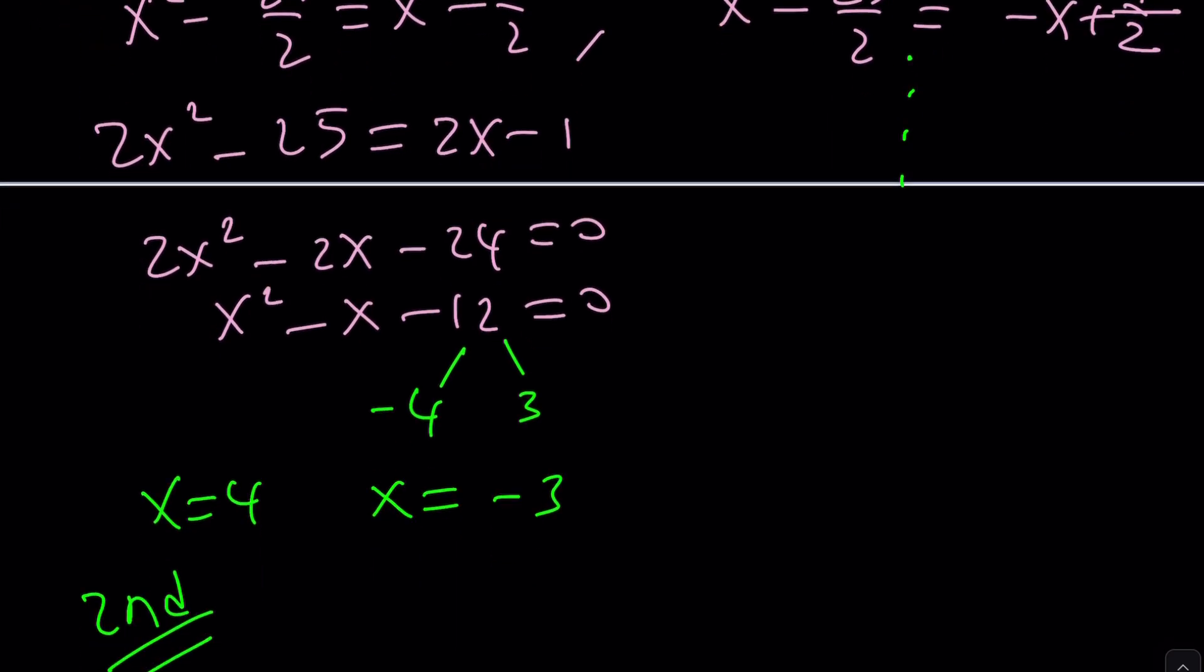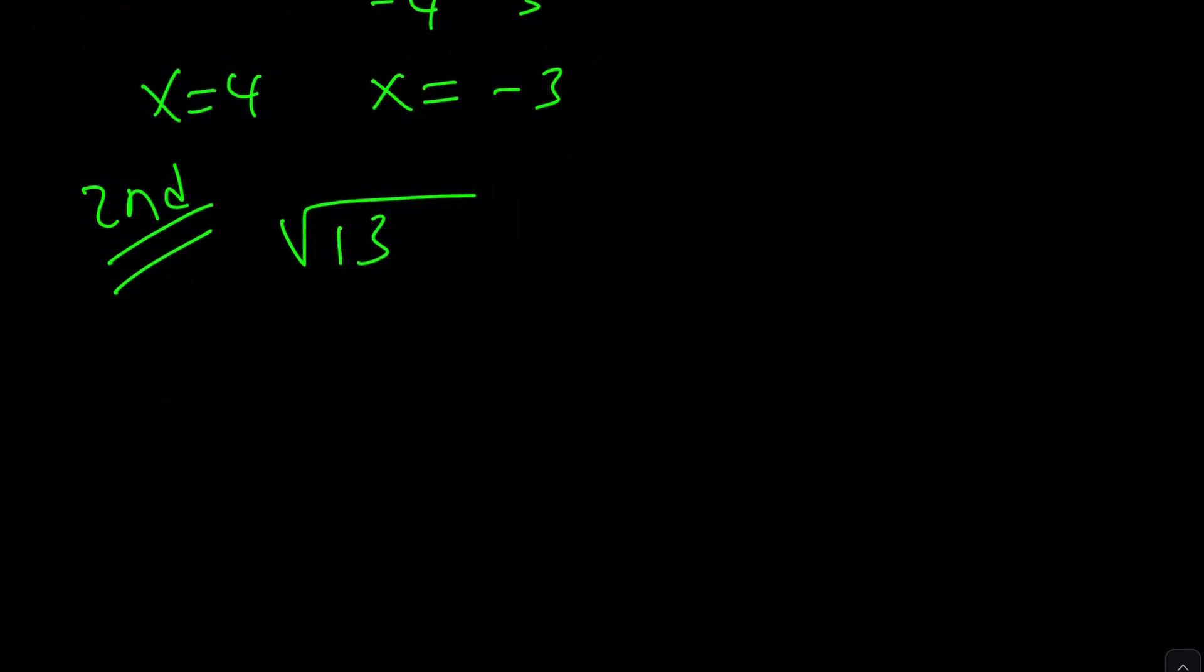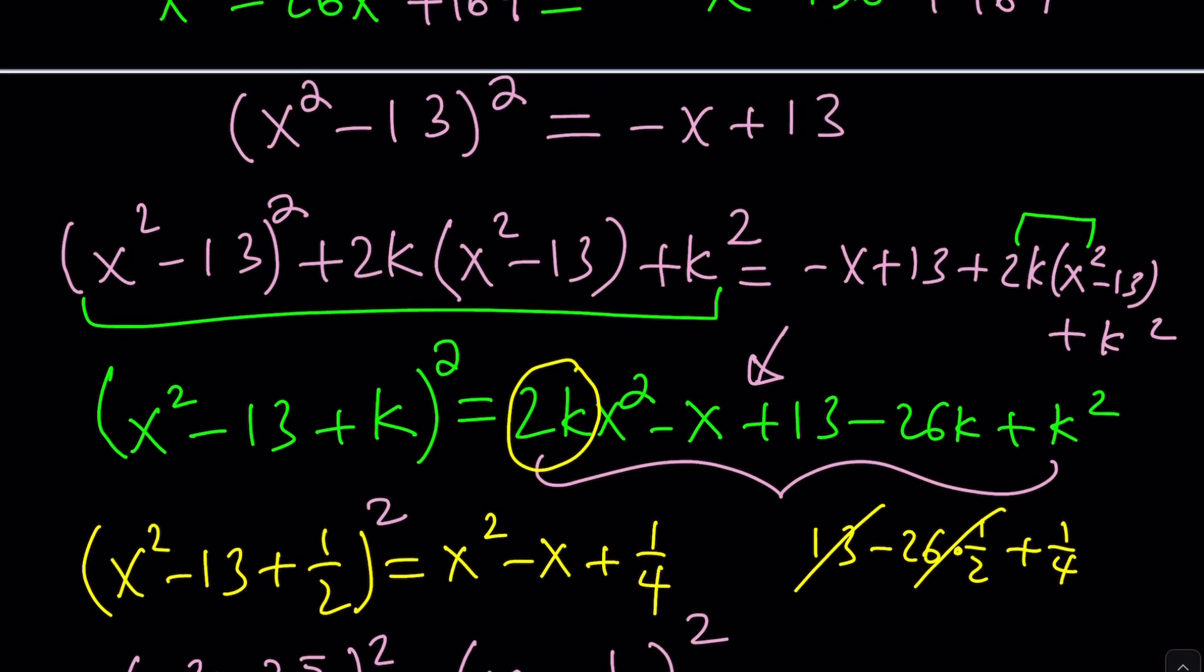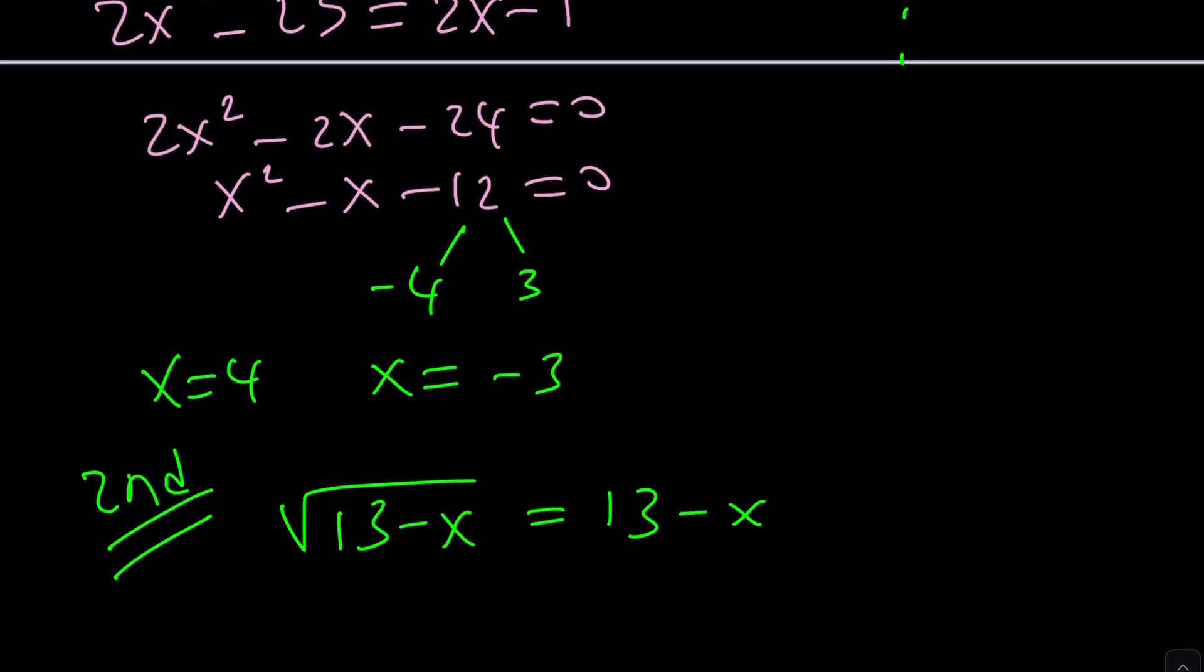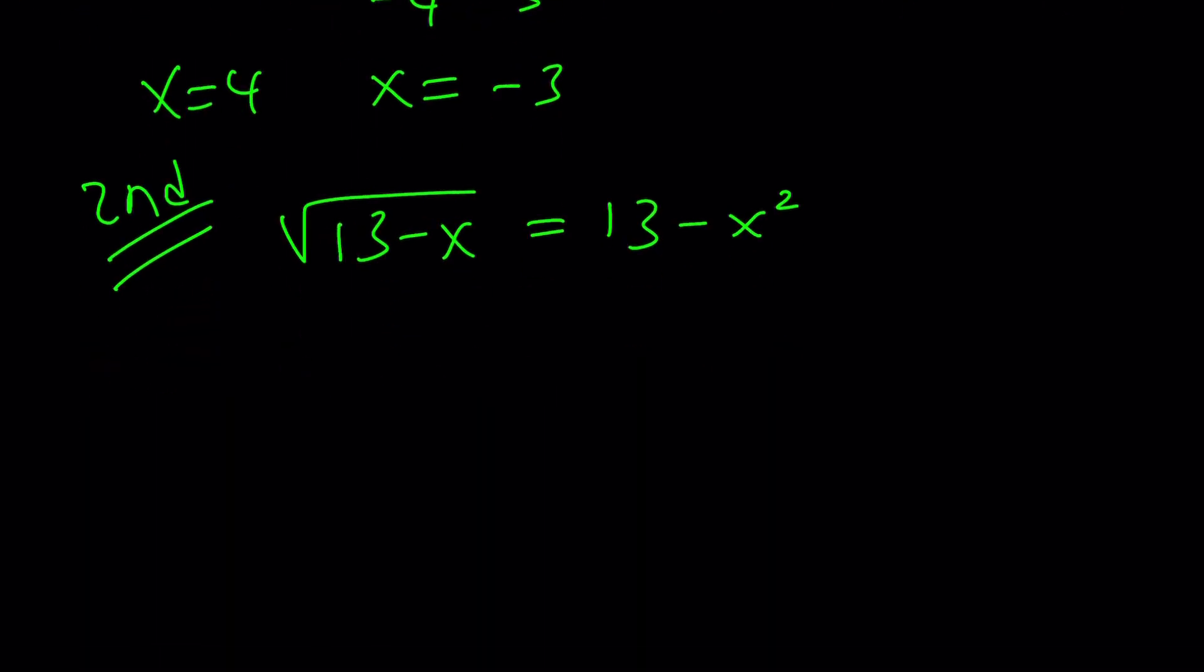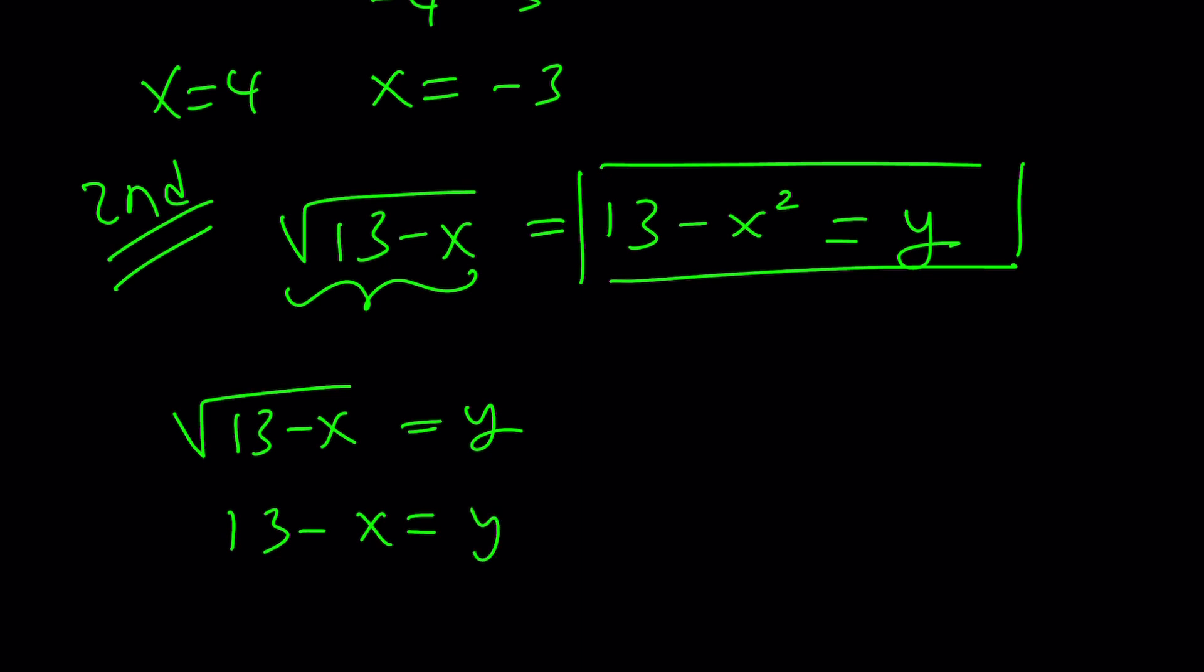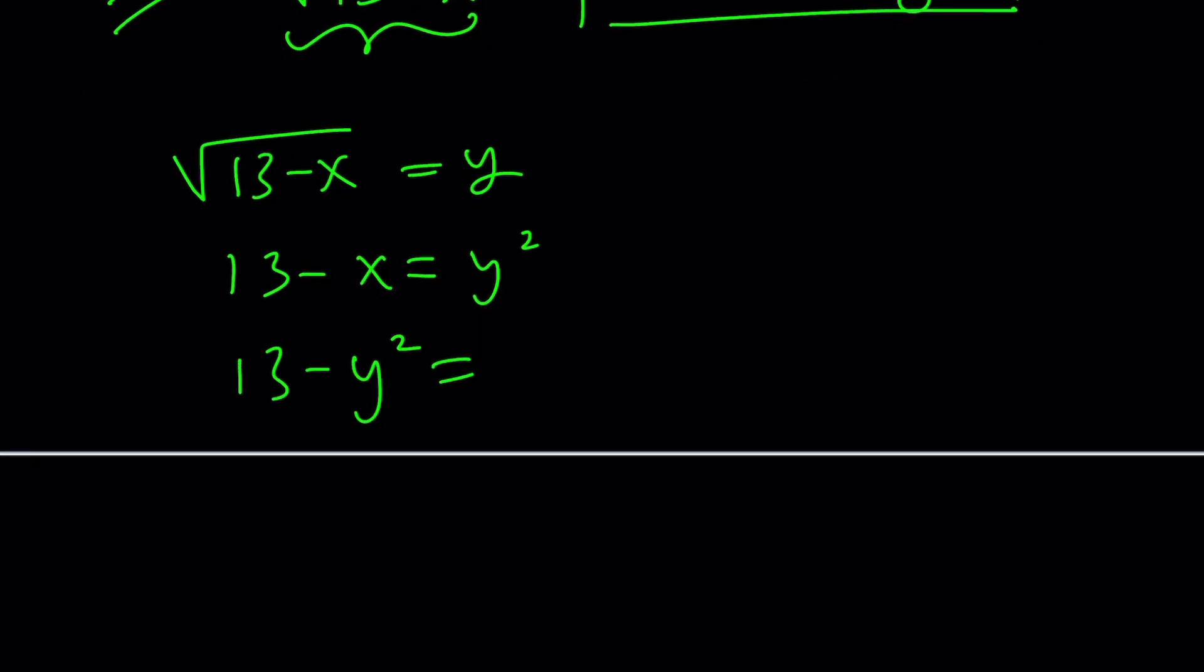What's the original problem? Square root of 13 minus x is equal to 13 minus x squared. Here we go. So here's what we're going to do. We're going to set this equal to y. And then that gives us one equation like this. And then we can also set this equal to y by transitive property. This gives us 13 minus x equals y squared, or 13 minus y squared equals x. Or even better, x plus y squared equals 13.